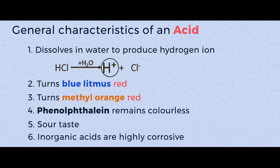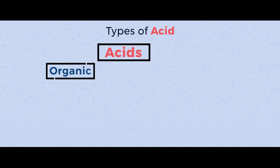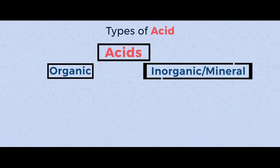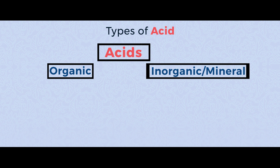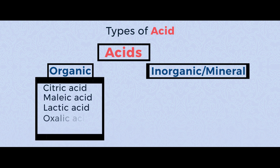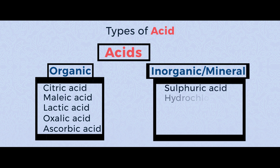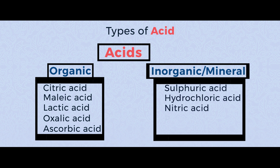Since we know about the general characteristics of acid, let's look at types of acid. Acid is broadly categorized into two types: organic acid and inorganic acid, which is also called mineral acid. Examples of organic acids are citric, malic, lactic, oxalic, and ascorbic acid. Examples of inorganic acids are sulfuric acid, hydrochloric acid, nitric acid, phosphoric acid, and carbonic acid.